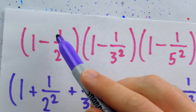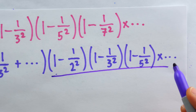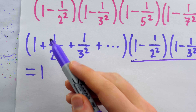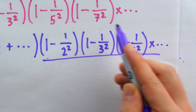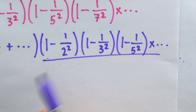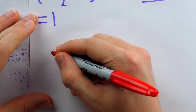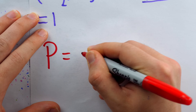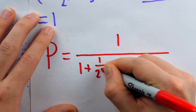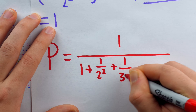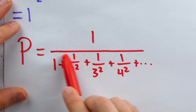So how do we find the probability that answers our original question? We know the probability is that infinite product. So all we have to do is take 1 and divide by the infinite sum. If we call the probability P, what we have is that P equals 1 over (1 + 1/2² + 1/3² + 1/4² + ...). And of course, this is where more mathematical machinery comes in.